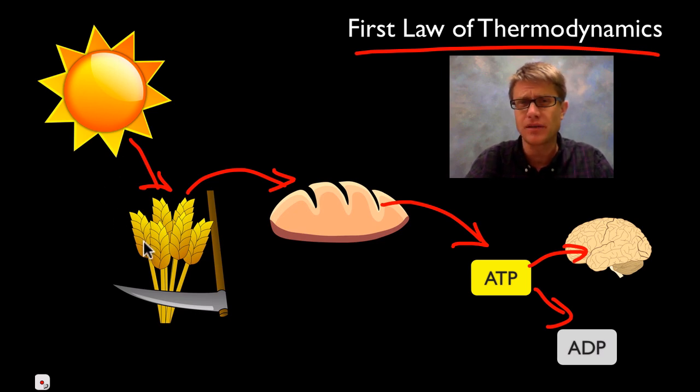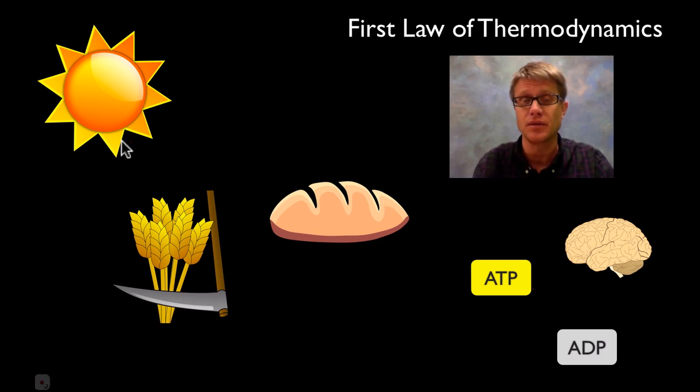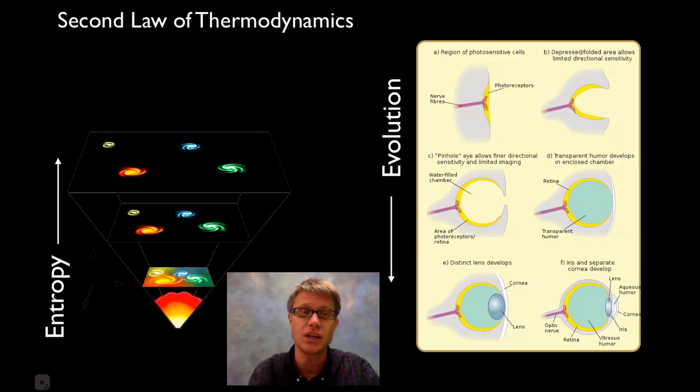The total amount of energy in a closed system is going to be constant. We can neither create nor destroy energy at each step, we're simply converting it. All energy will eventually end up as a lowest form of energy which is heat.